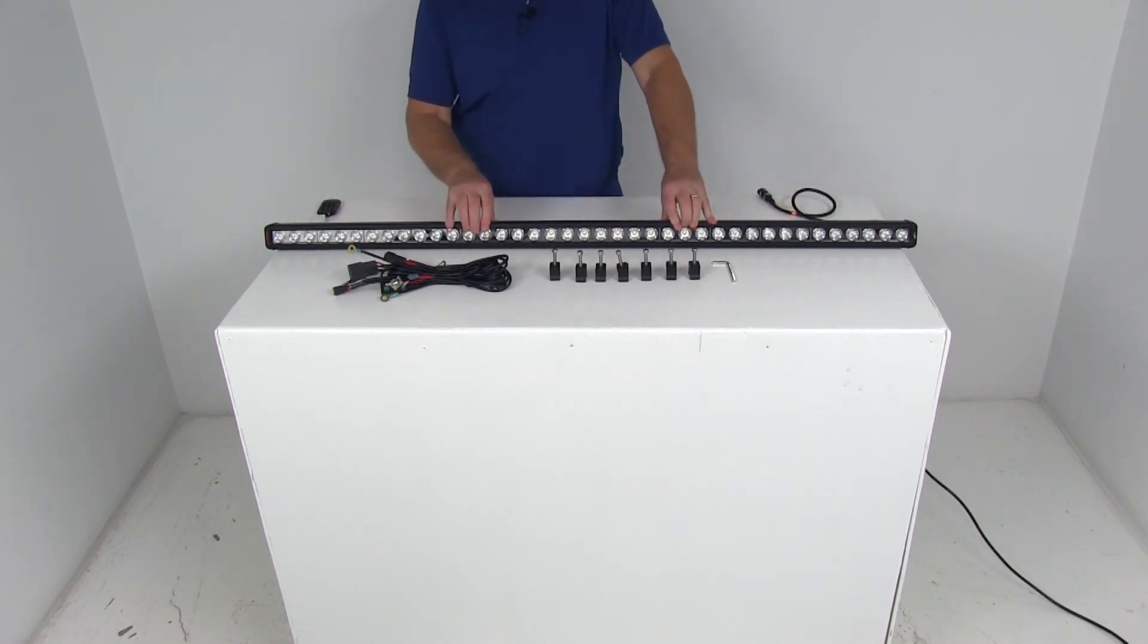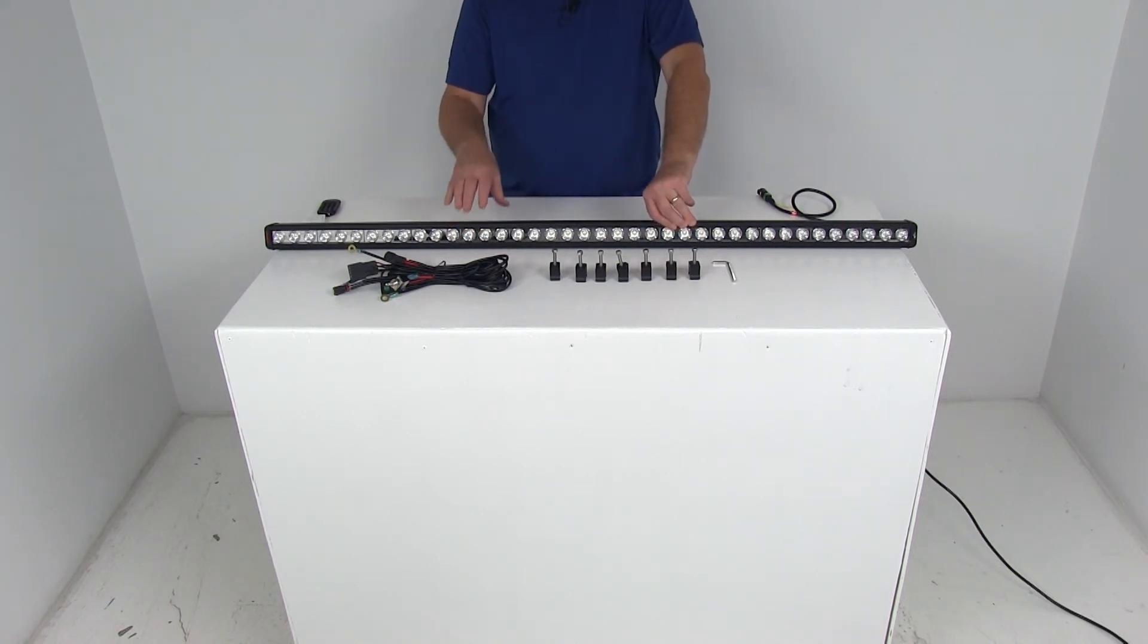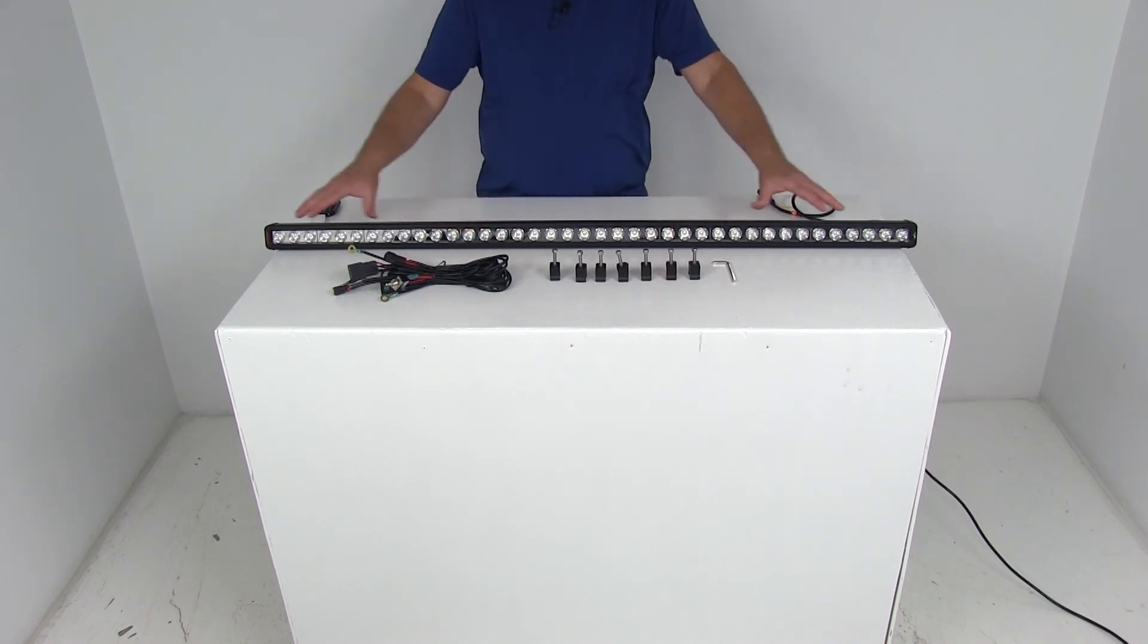The light output, the effective lumen output on this bar is 13,459 lumens. The raw lumen output is 19,227 lumens. Again, the beam it gives off is a narrow 10 degree spot.